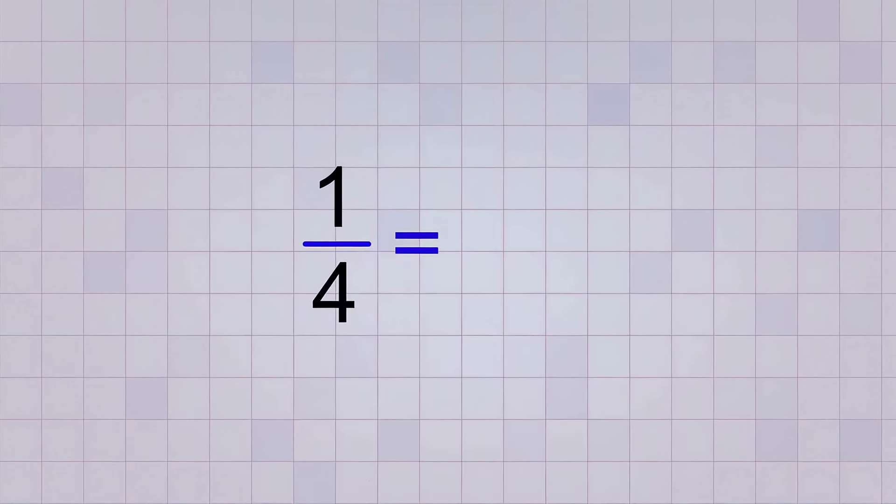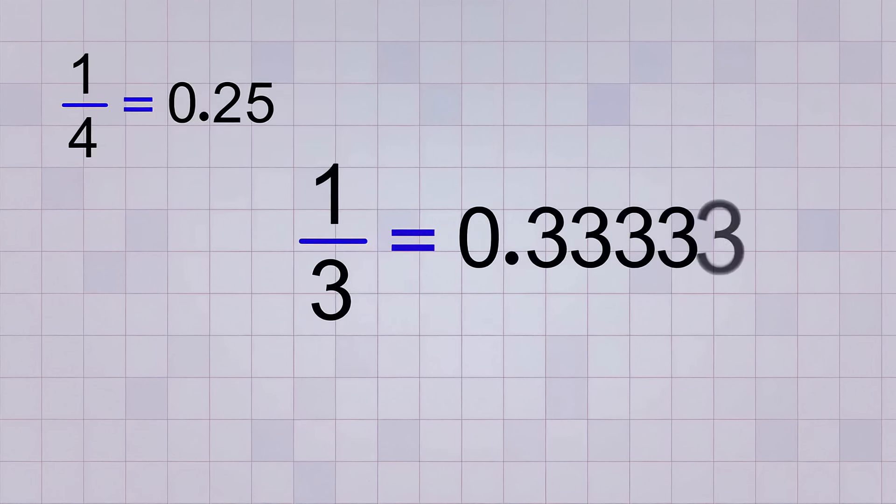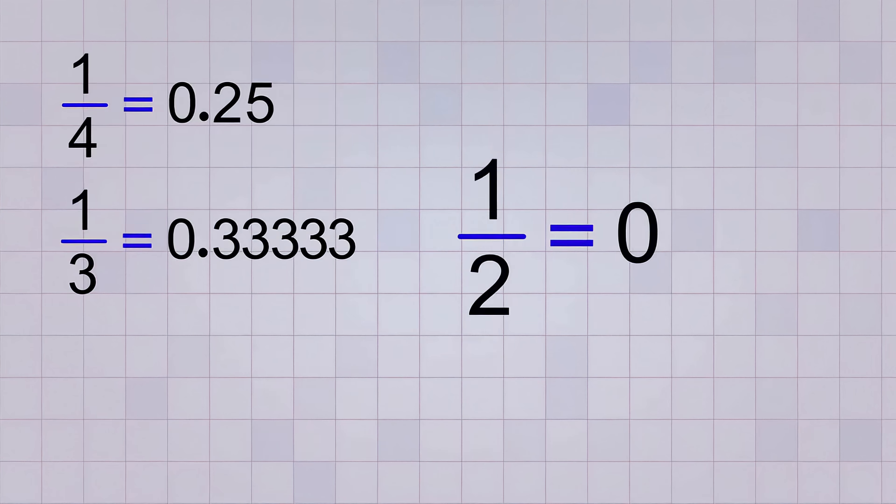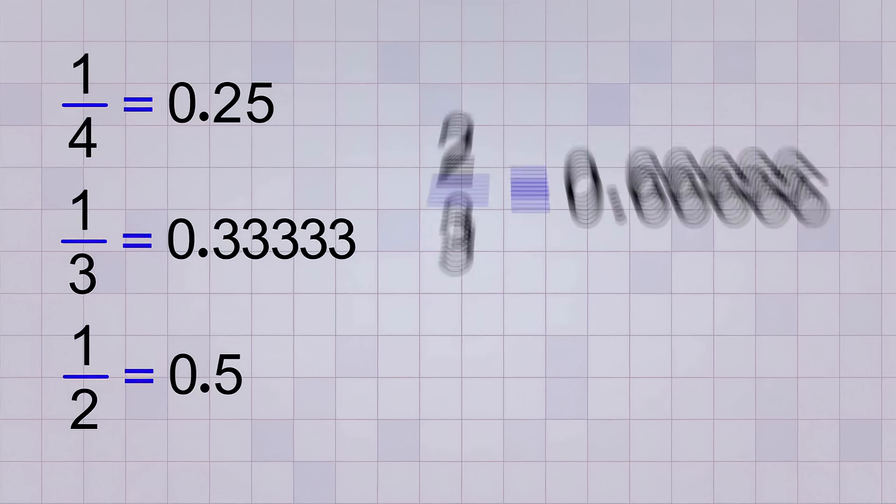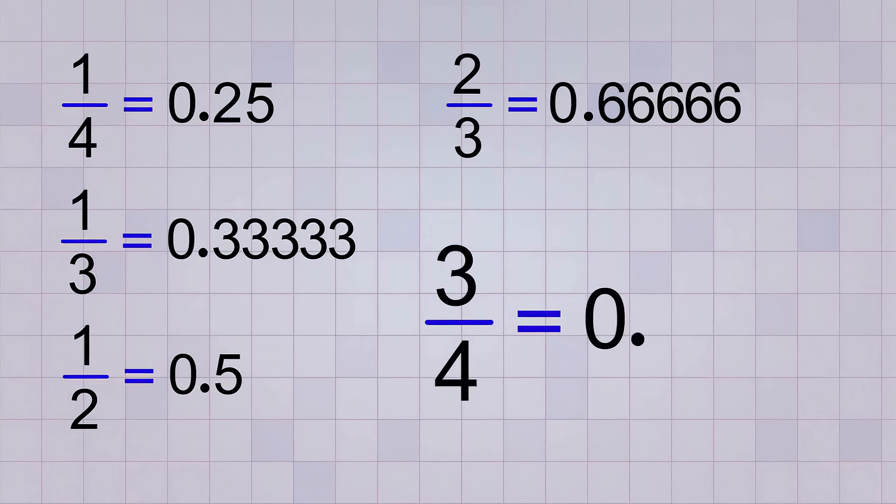The 5 fractions that we've just converted are so common that it's a good idea to memorize their decimal values. Here they are again so you can review them. 1 fourth equals 0.25, 1 third equals 0.33333, 1 half equals 0.5, 2 thirds equals 0.66666, and 3 fourths equals 0.75.